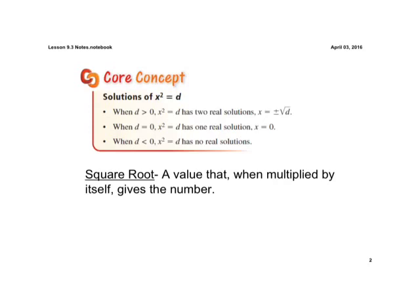So our core concept, kind of dealing with that idea, is we have a variable squared equals a number. What we need to do is try to figure out how we can get that variable by itself, or how we can get rid of that squared. So the first one here, it says when d, when our number is greater than 0, and we have x squared equals d. So for example, we had like x squared equals 4.